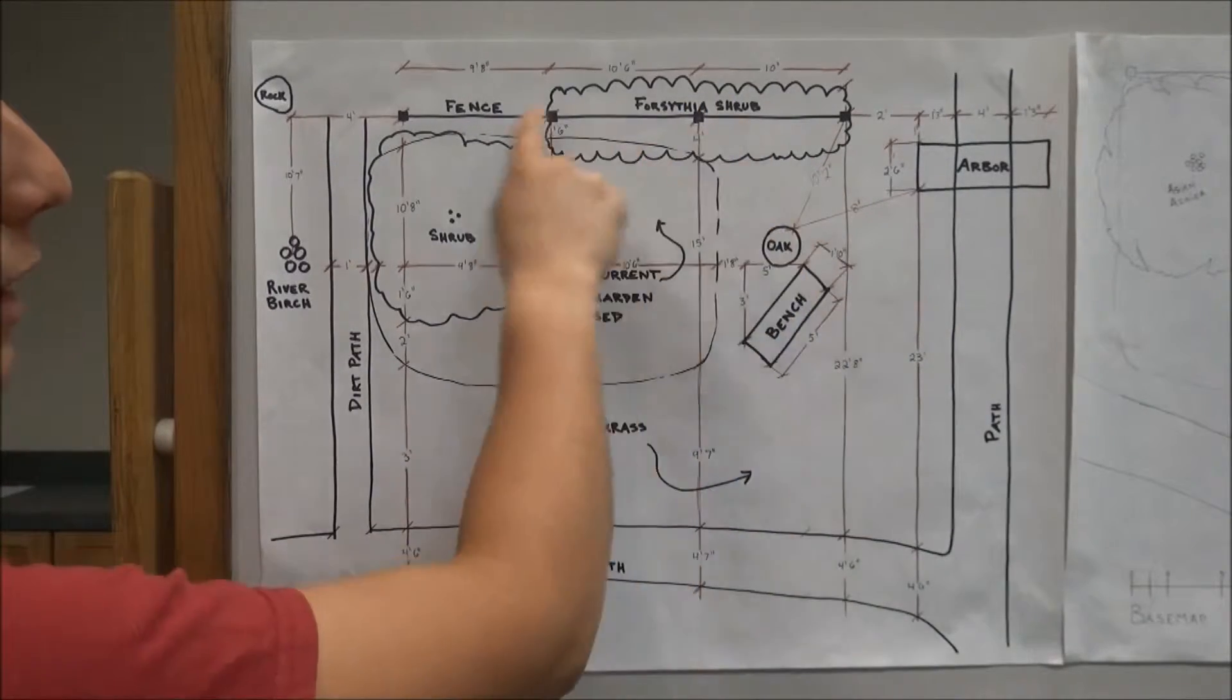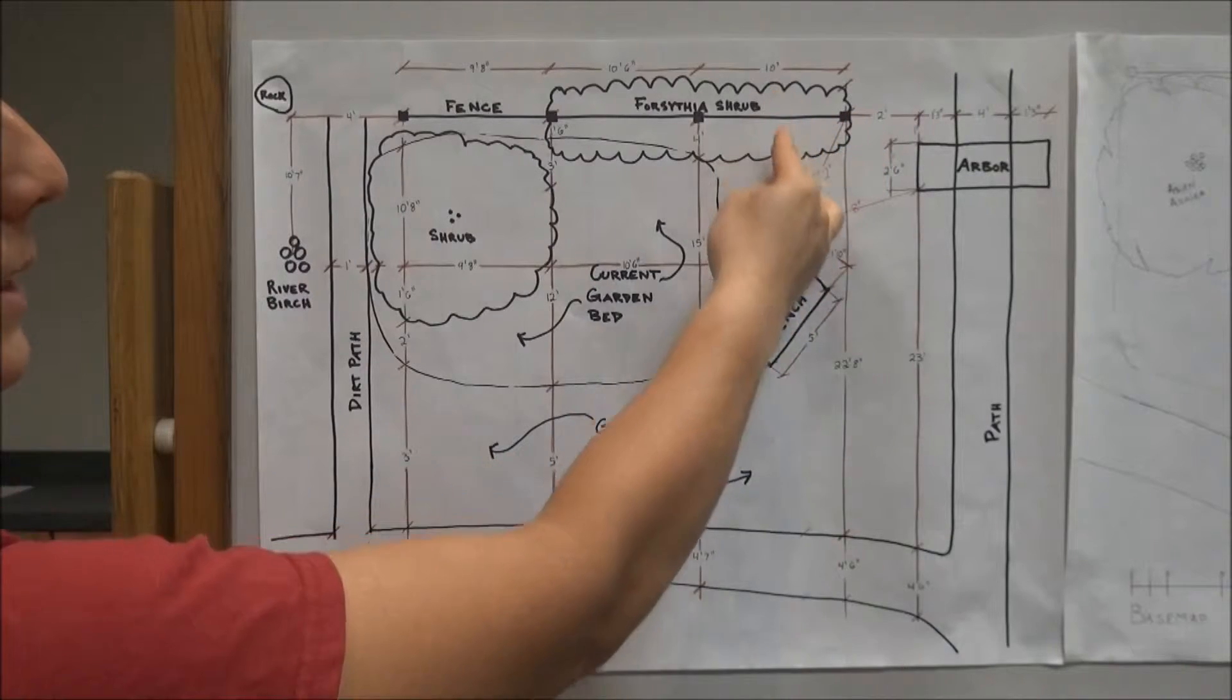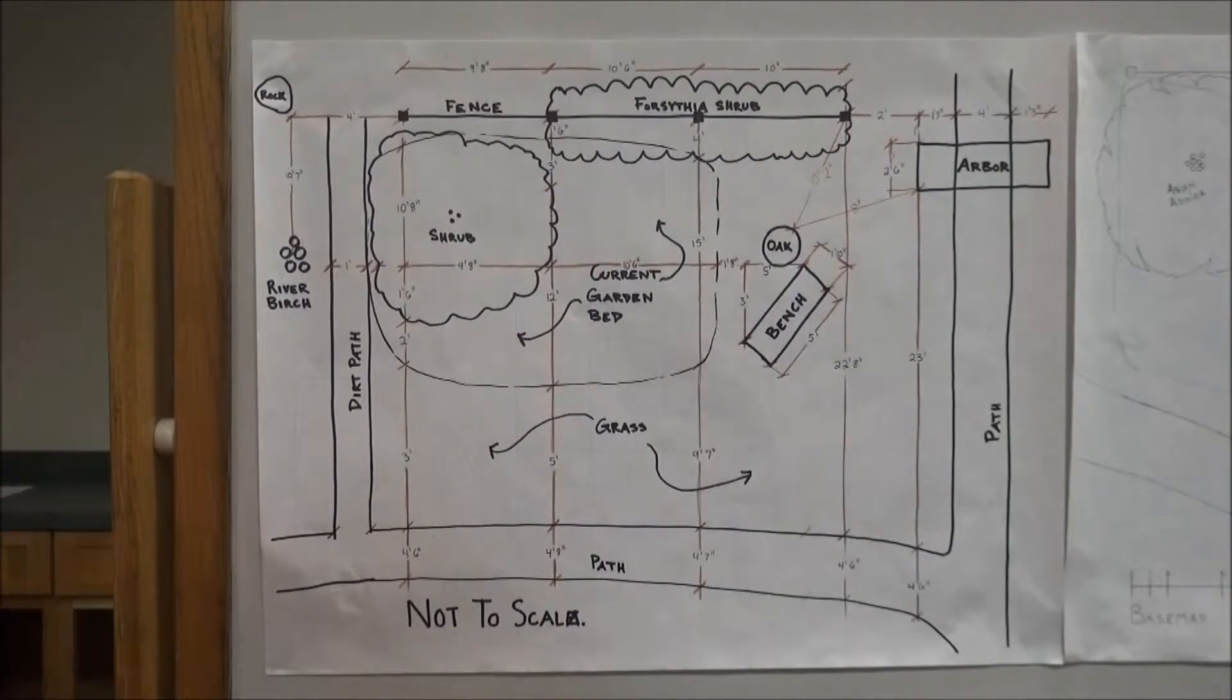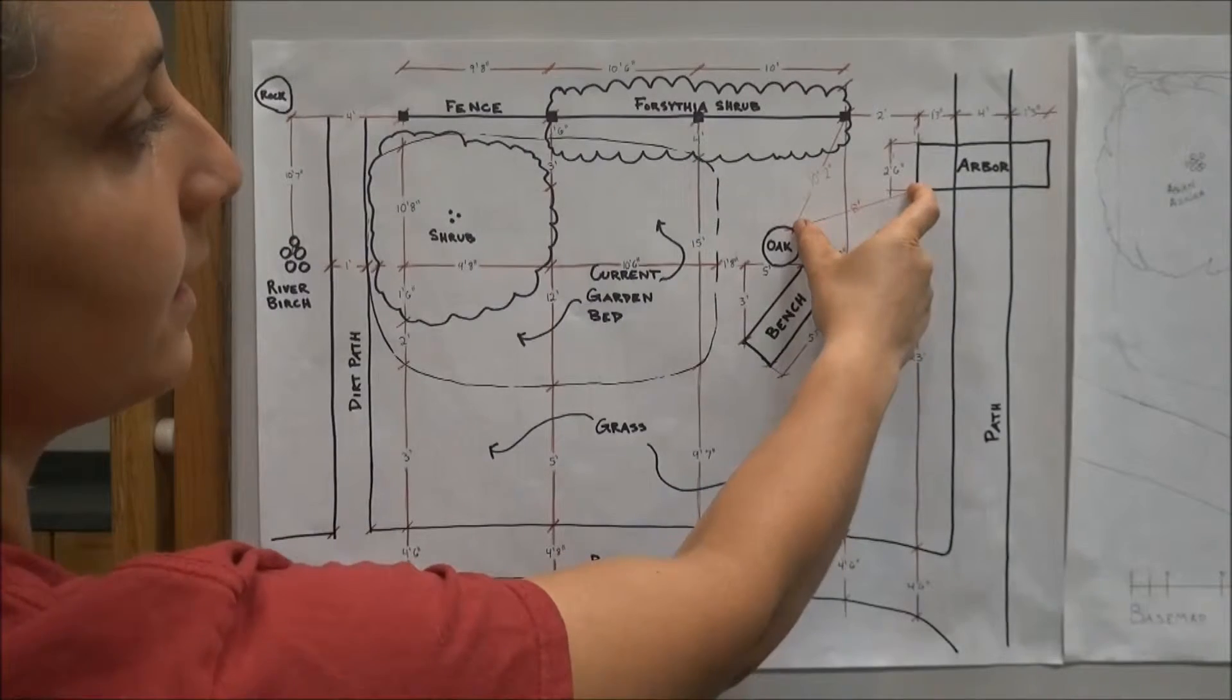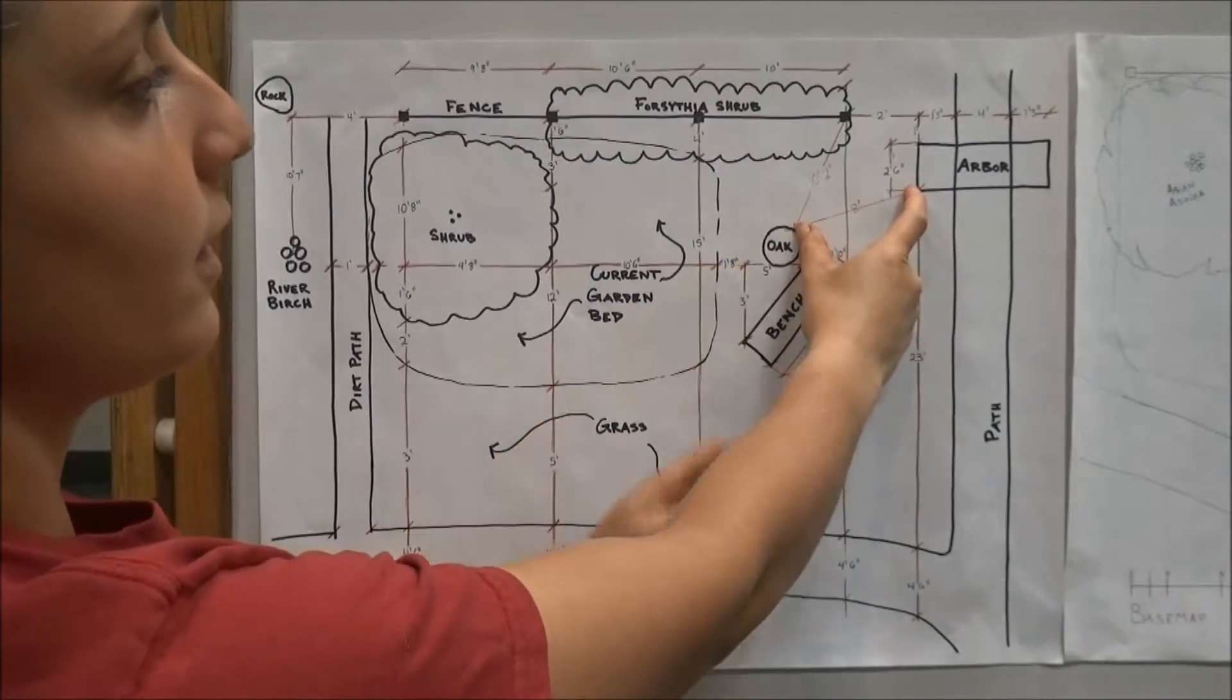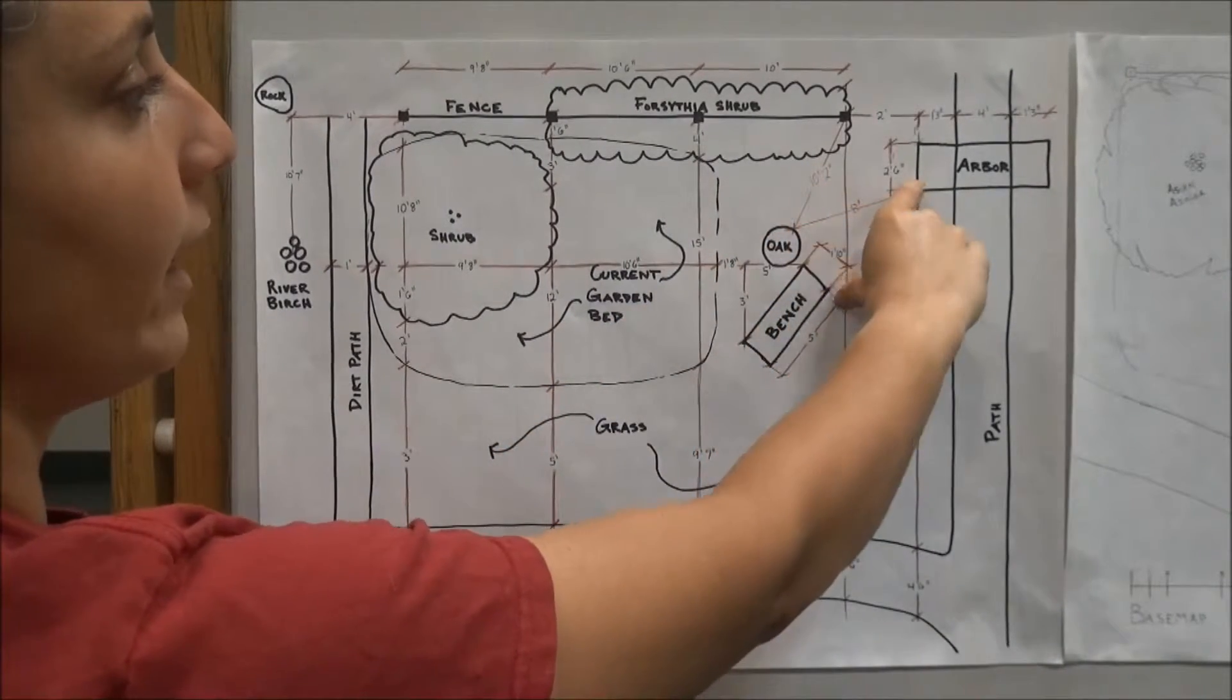They're not necessarily perpendicular lines off of my fence line. So some of those points you need to triangulate. And again, triangulation is measuring the distance of an object from two known points, then finding where those distances intersect.